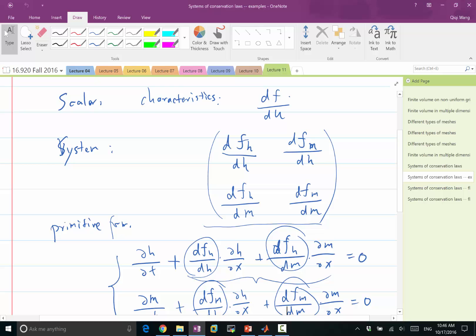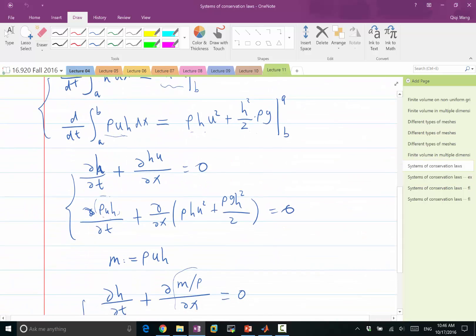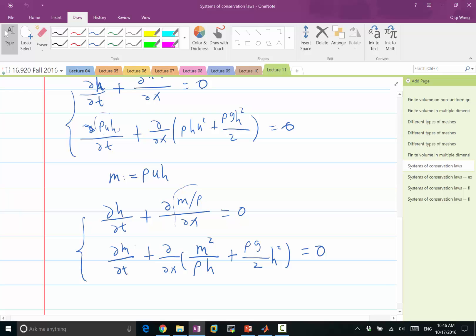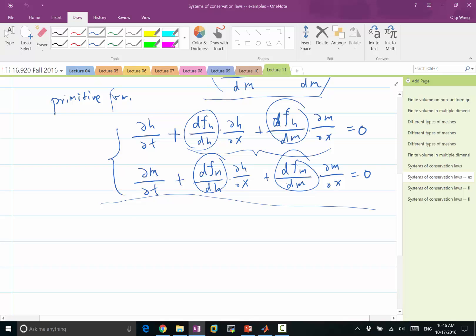For example, in our shallow water equation. In the shallow water equation, our FH is equal to M divided by rho. Our FM is going to be M squared over rho H plus half of rho GH squared, right?